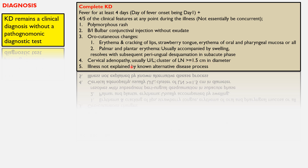The last criterion is that the illness should not be explained by a known alternative disease process. Importantly, these clinical features can occur at any point during the illness and do not necessarily occur in a concurrent fashion.